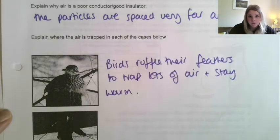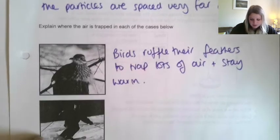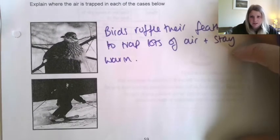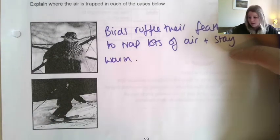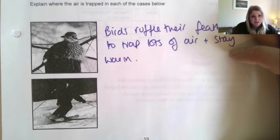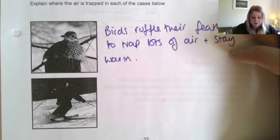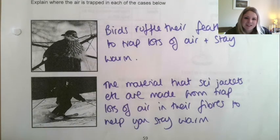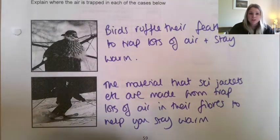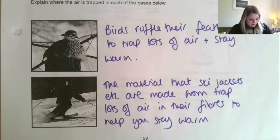Birds ruffle their feathers to trap lots of air and stay warm. The next one is someone skiing down a slope. The materials that ski clothes and heavy duty winter clothes are made from are designed to trap lots of air in between the fibres so that it keeps you warm in really cold conditions. The material that ski jackets are made from traps lots of air in their fibres to help you stay warm, because air is a really good insulator since its particles are really, really spread out.